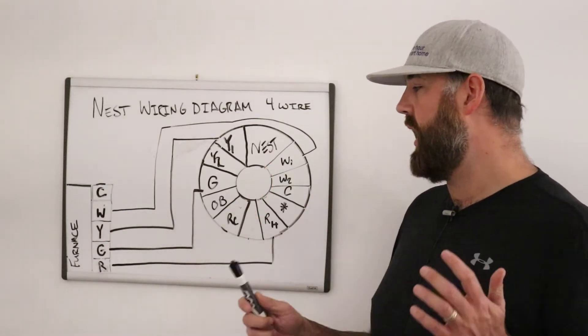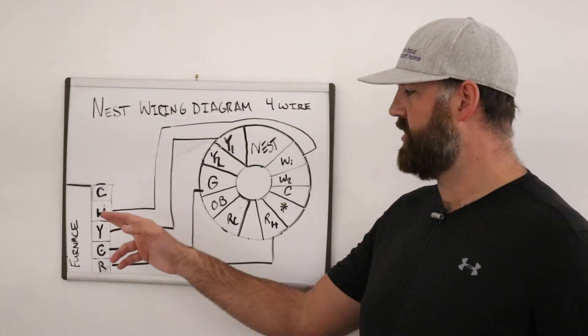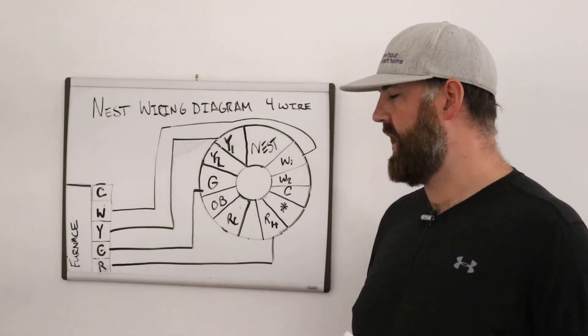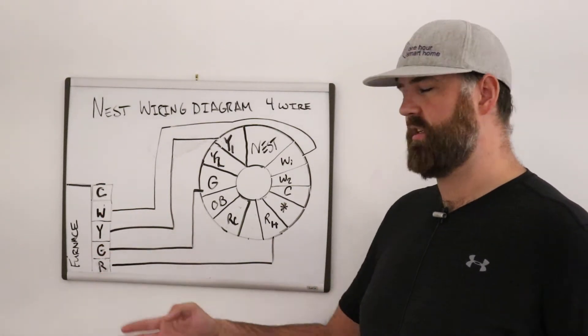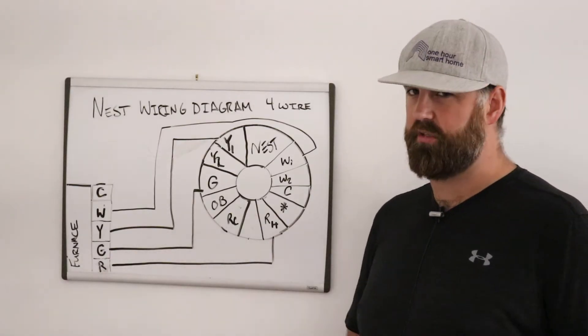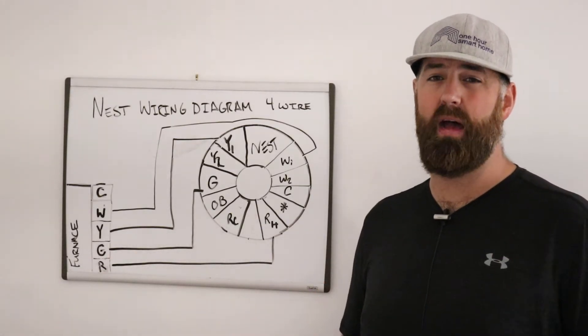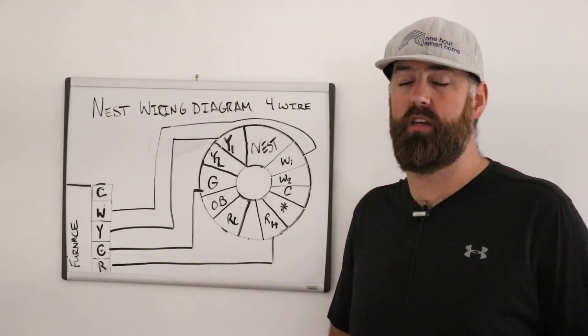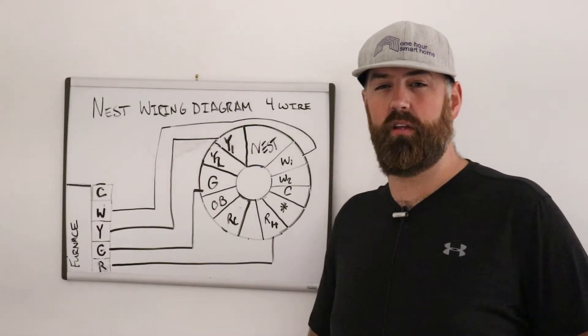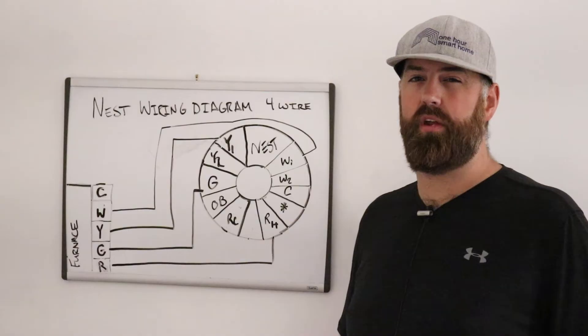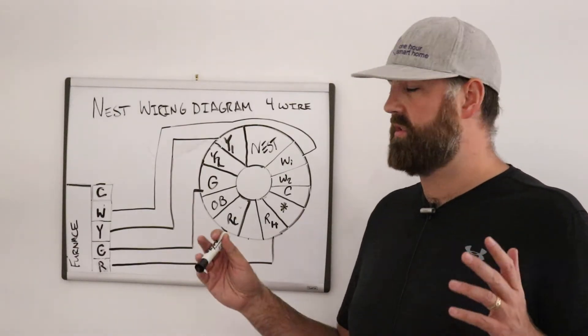Typically, the wires are supposed to follow convention of W is supposed to be white, Y is supposed to be yellow, G is supposed to be green, and R is supposed to be red. That's typically what's supposed to happen, but some people do remodeling or some people just have a contractor that, I don't know, it's colorblind or something like that, and they mix up and jumble all the colors. Typically, they don't, but sometimes they do.